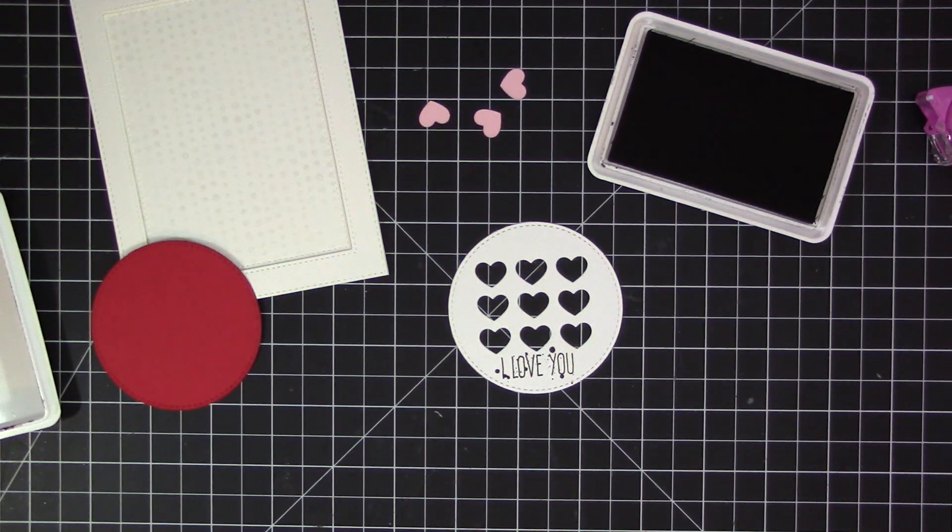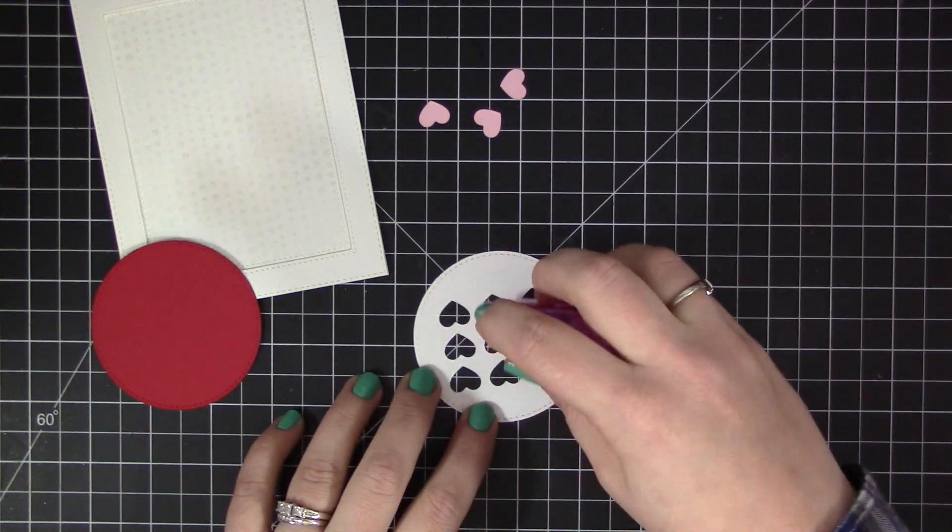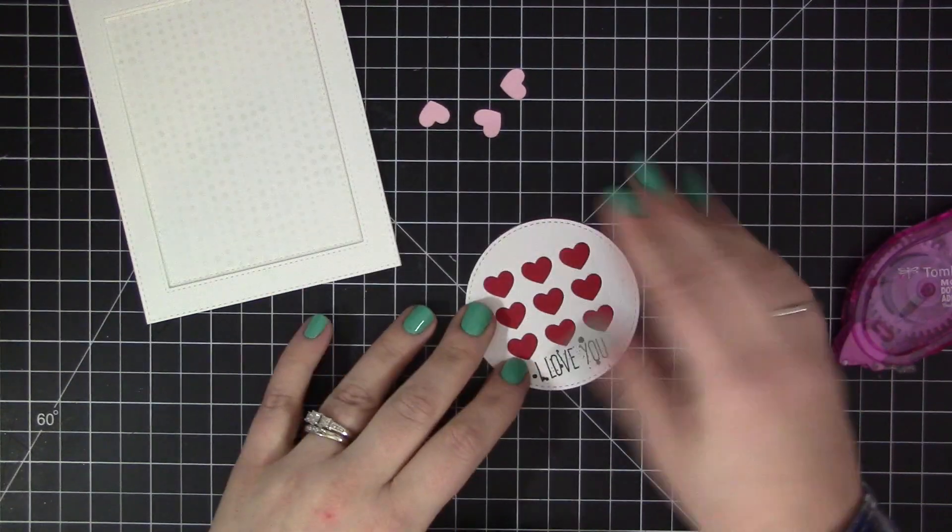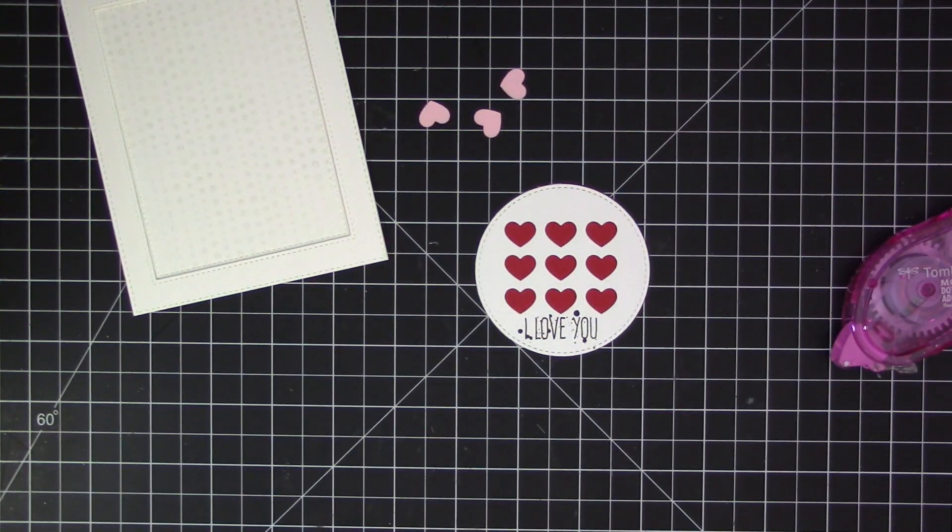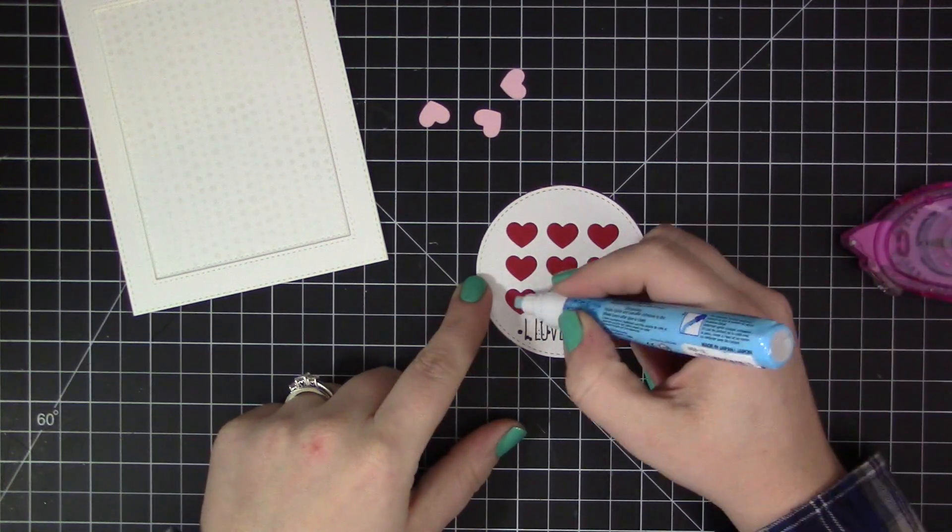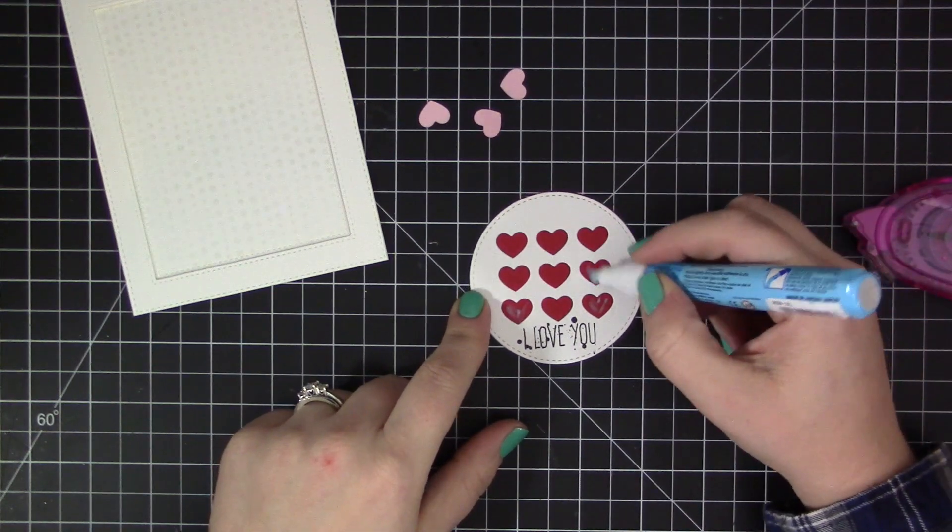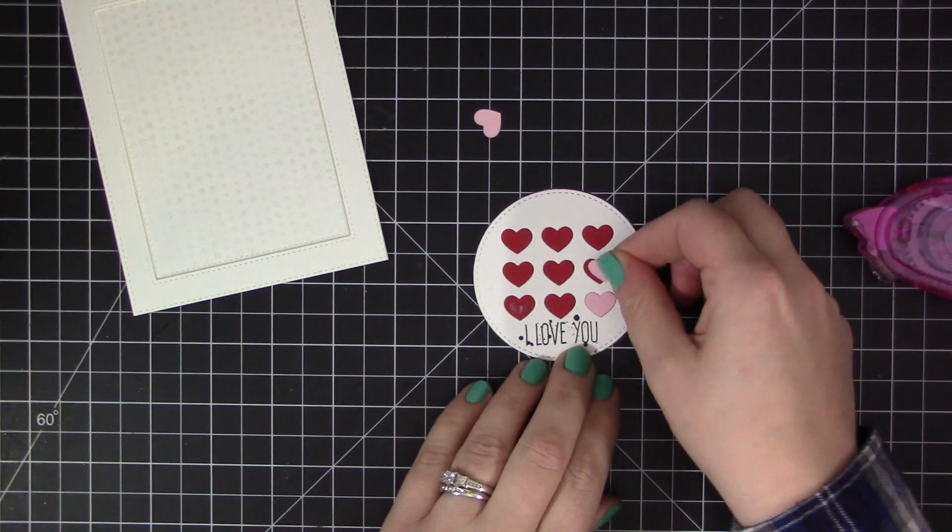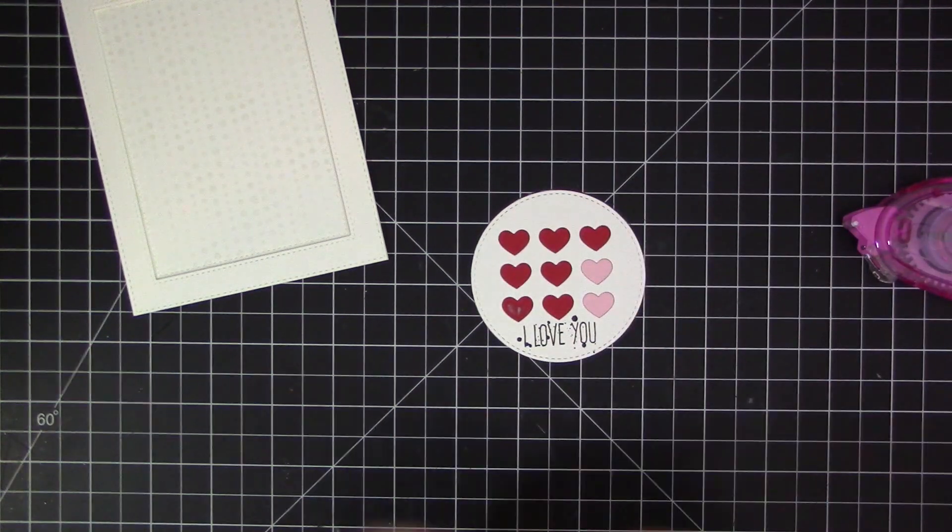Before I do any adhering, I stamped my sentiment. I used the "I love you" from the Whimsical Greetings stamp set and stamped that directly at the bottom. Then I used one of the little paint splatters from the Distressed Patterns stamp set and stamped that directly over the "I love you." It gives a little bit of a distressed look but still lets you see that sentiment.